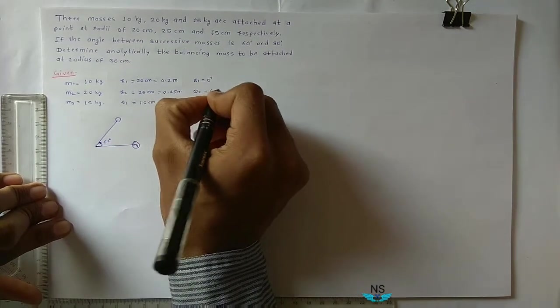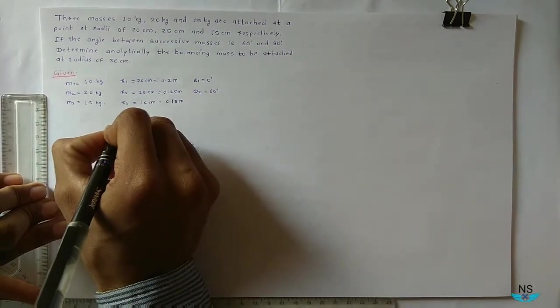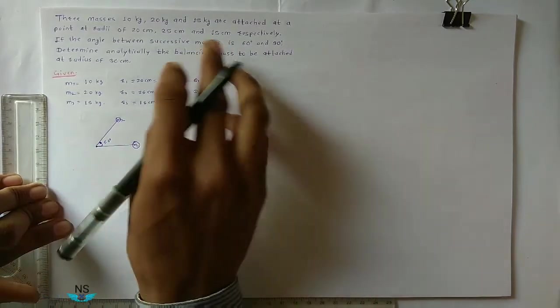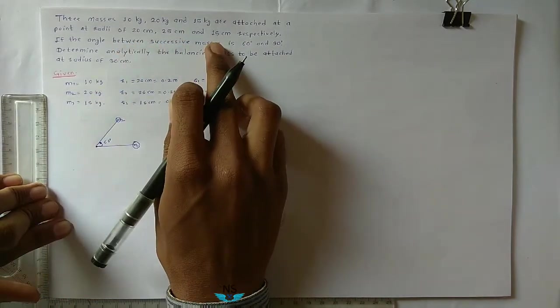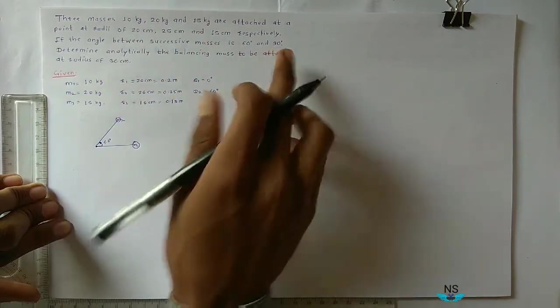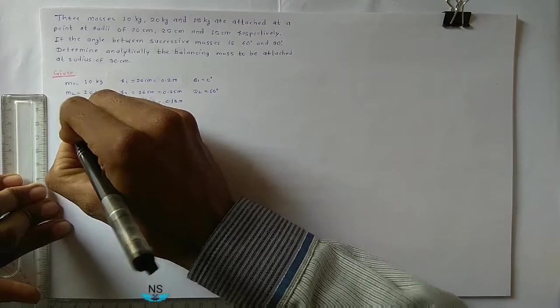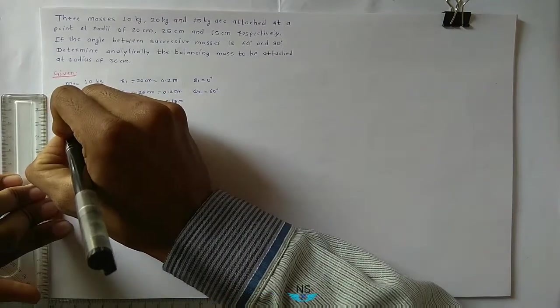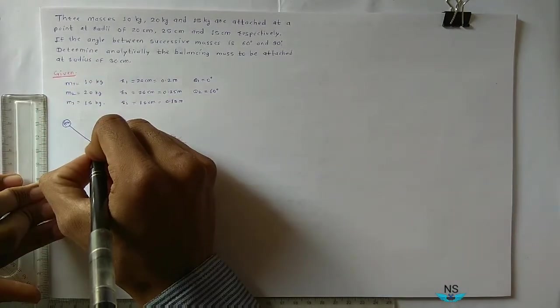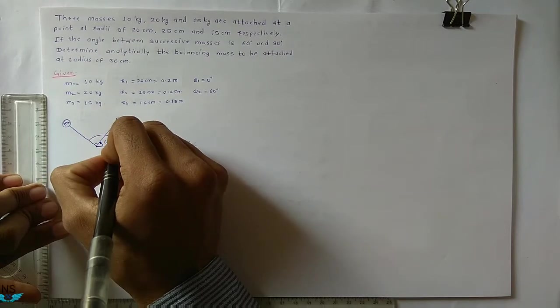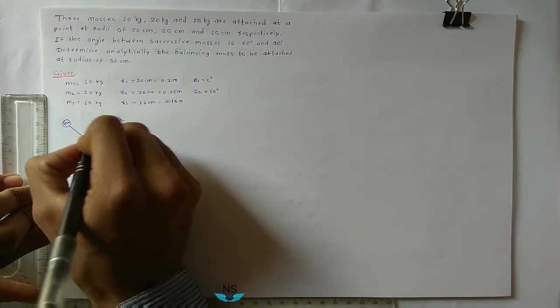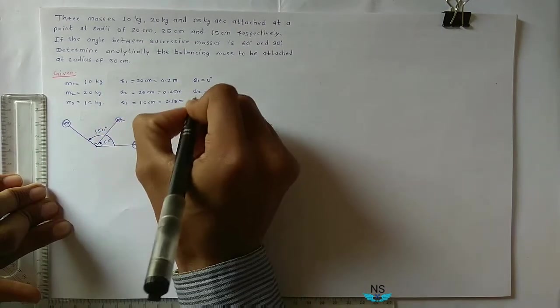Now successive angle between 20 and 15 is 90 degrees. There will be third mass M3. This angle is theta 3, so 90 plus 60 equals 150 degrees. This is the configuration diagram.